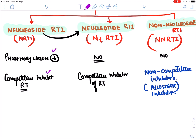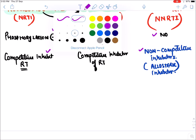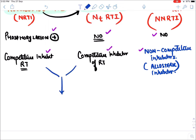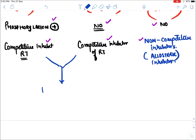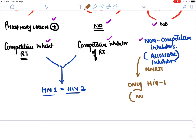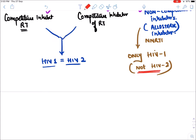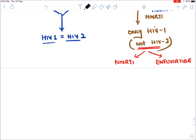NRTIs and NtRTIs are effective against both HIV-1 and HIV-2. NNRTIs, however, are only effective against HIV-1 virus, not HIV-2. So two classes of drugs not effective against HIV-2 are NNRTIs and Enfuvirtide.